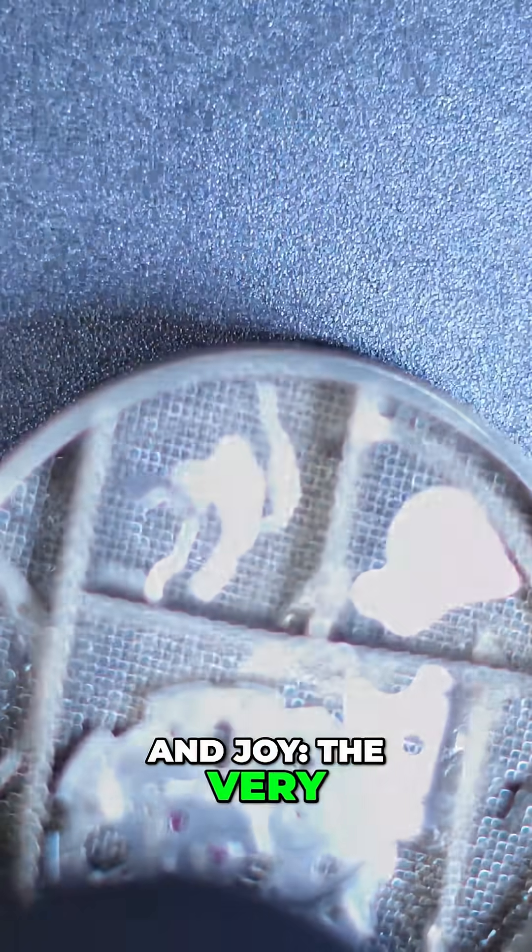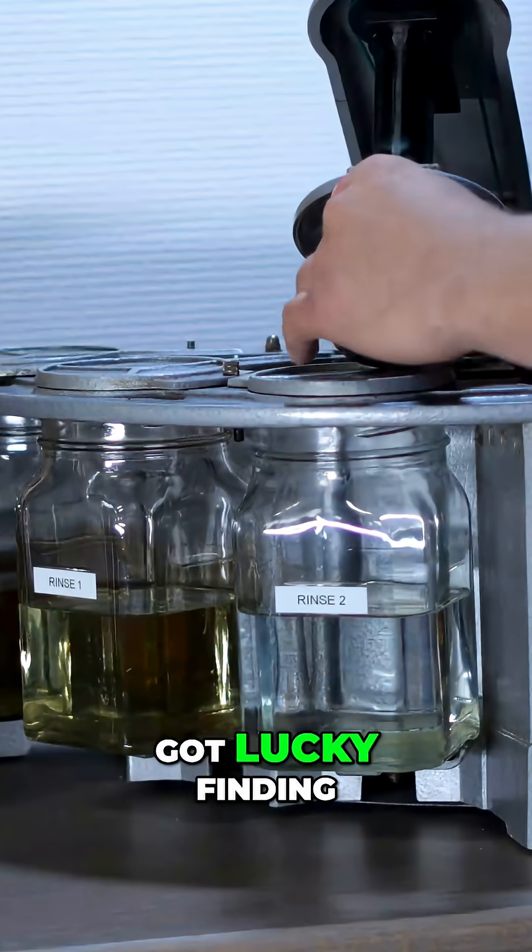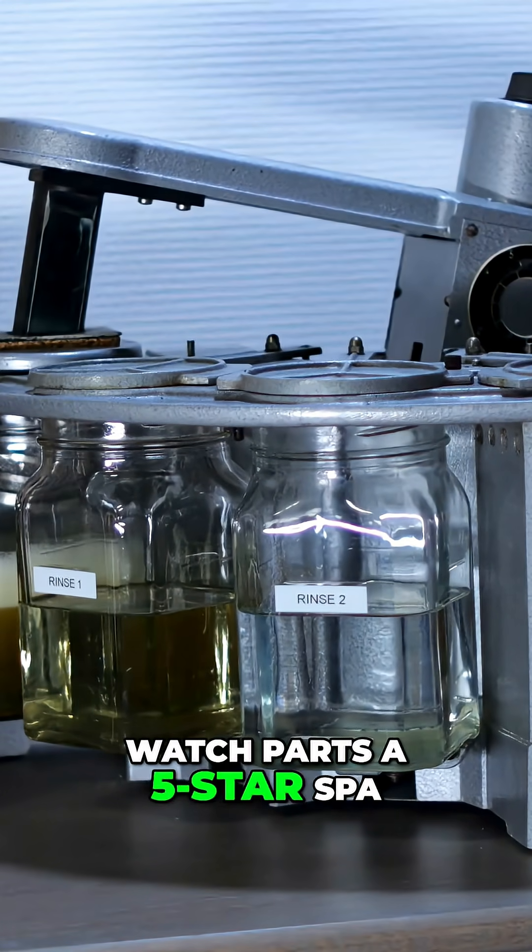Meet my pride and joy, the very first full automatic Elma cycle machine. Yep, got lucky finding it, and no, you can't borrow it. Here's how it gives watch parts a five-star spa day.